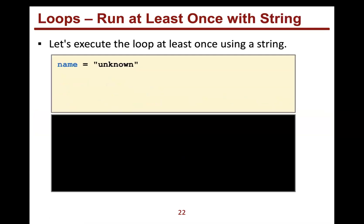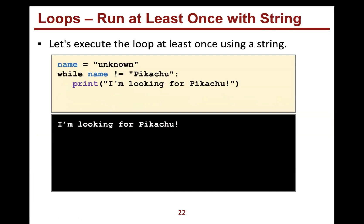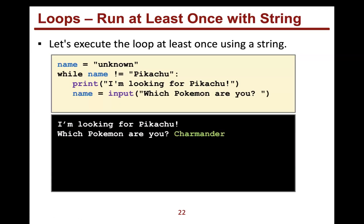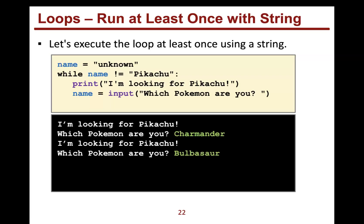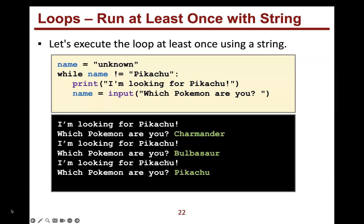You can also use a string sentinel. For example: name = 'unknown', while name doesn't equal 'Pikachu'. I'm looking for Pikachu. Get user input — they enter 'Charmander', that's not Pikachu so we stay in the loop. They enter 'Baltazar', still not right. When they finally enter 'Pikachu', the condition is satisfied and we print 'I found Pikachu'.